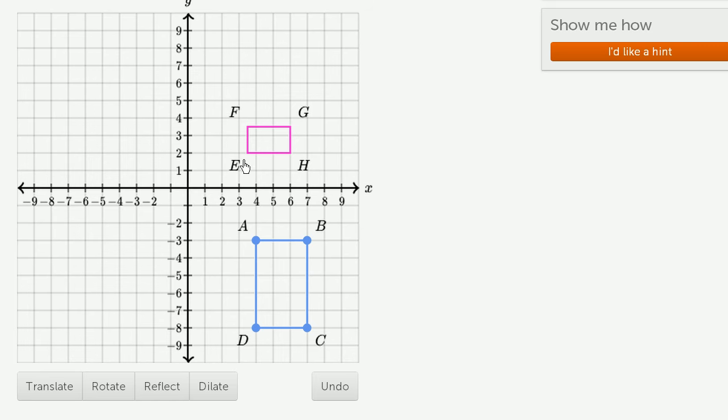These two quadrilaterals, quadrilateral EFGH and ABCD, are similar if through some combination of translations, rotations, reflections, and dilations, I can make them sit on top of each other.